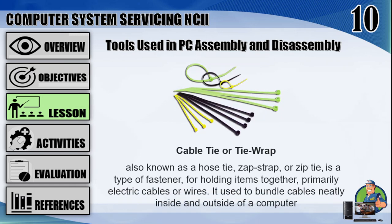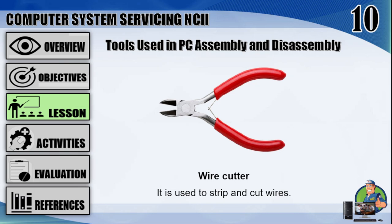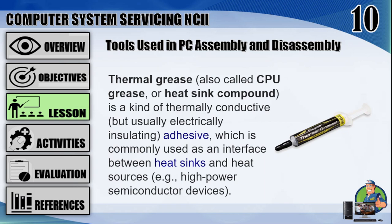Number 6: cable tie or tie wrap, also known as a hose tie, strap, or zip tie, is a type of fastener for holding items together, primarily electric cables or wires. It is used to bundle cables neatly inside and outside of a computer. Number 7: wire cutter, used to strip and cut wires. Number 8: thermal grease, also called CPU grease or heat sink compound, is a thermally conductive but usually electrically insulating adhesive, commonly used as an interface between heat sinks and heat sources, e.g., high-power semiconductor devices.